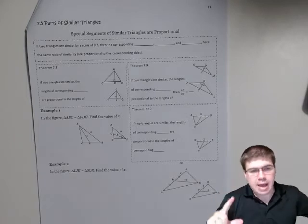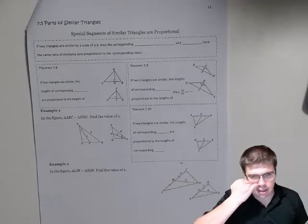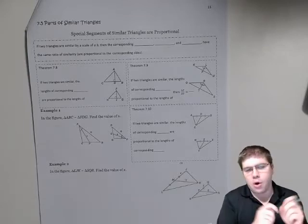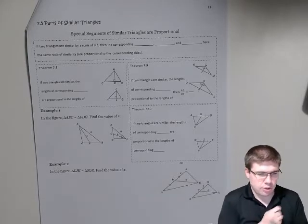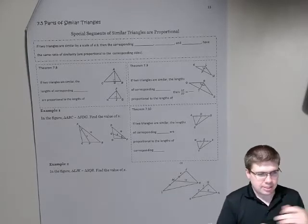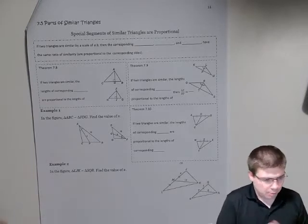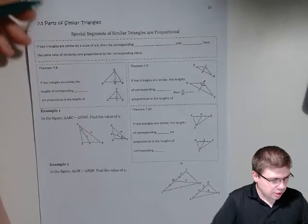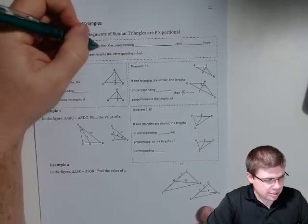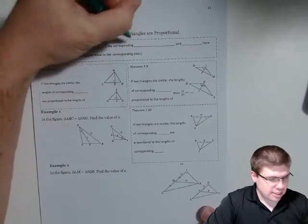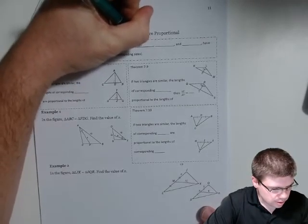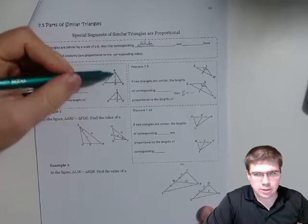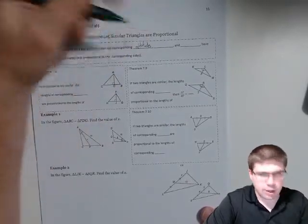Turns out that the angles in similar figures are all the exact same angles, and all of the segments you could draw that are the corresponding segments, not just the sides of the triangle, are proportional as well. If two triangles are similar by a scale of a to b, then the corresponding altitudes - those are the heights of the triangle, that's a fancy word for the height of the triangle.